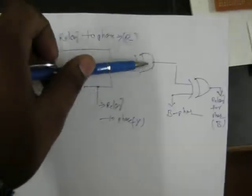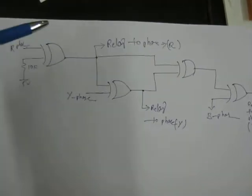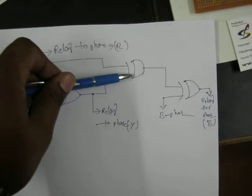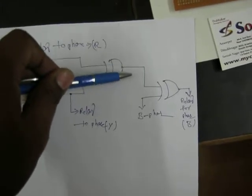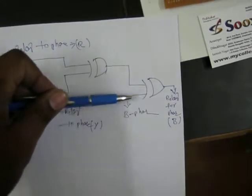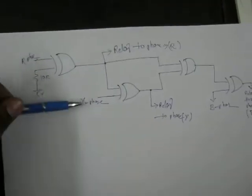This output is given to the third gate. You will get the input from the R phase output and the Y phase output given to the third gate, and the third gate output will be given as input to the B phase gate. According to this gate presence, these XOR gates operate these relays.